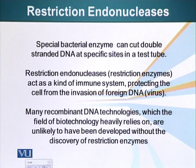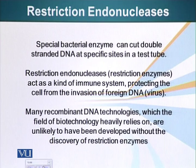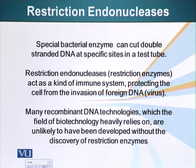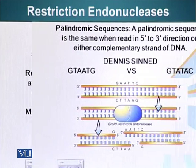That is what led scientists to explore this phenomenon, and they found that there are bacterial enzymes that can cut double-stranded DNA at specific sites. Since these enzymes restricted the growth of bacteriophage, they were called restriction enzymes. Many recombinant technologies in the field of biotechnology heavily rely on the discovery of restriction enzymes, so it is very important.